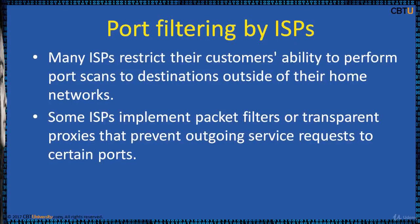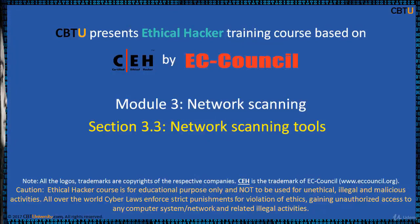Many internet service providers restrict customers' ability to perform port scans to destinations outside of their home networks. This is usually covered in terms of service or acceptable use policy. Some ISPs implement packet filters or transparent proxies that prevent outgoing service requests to certain ports. For example, if an ISP provides a transparent HTTP proxy on port 80, port scans of any address will appear to have port 80 open, regardless of the target host's actual configuration.